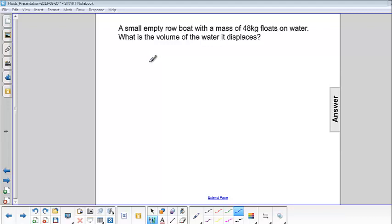A small empty rowboat with a mass of 48 kilograms floats on water. What is the volume of the water it displaces?